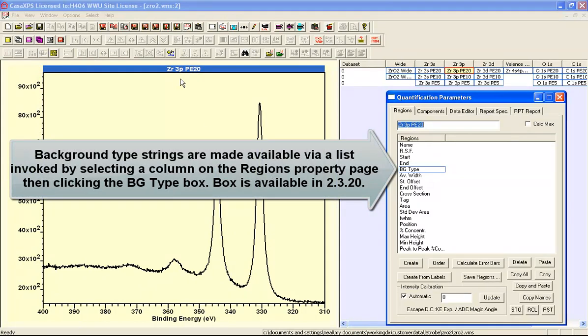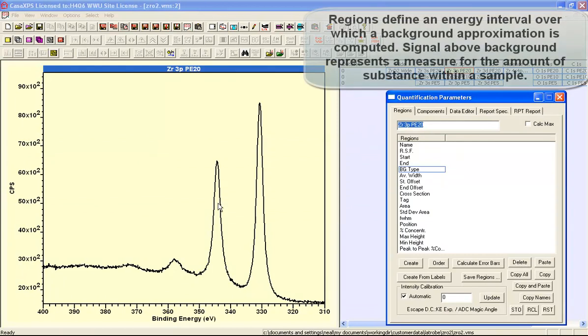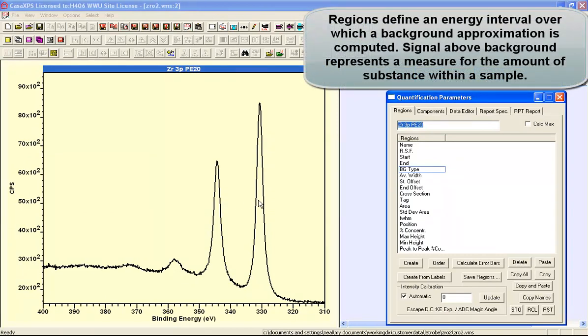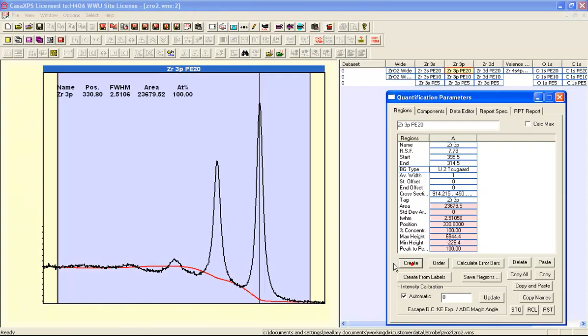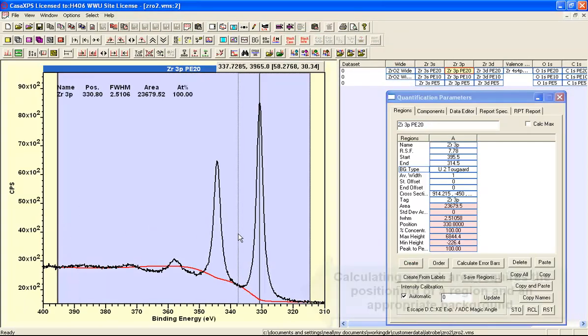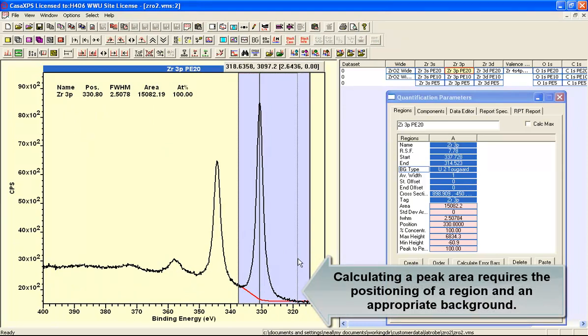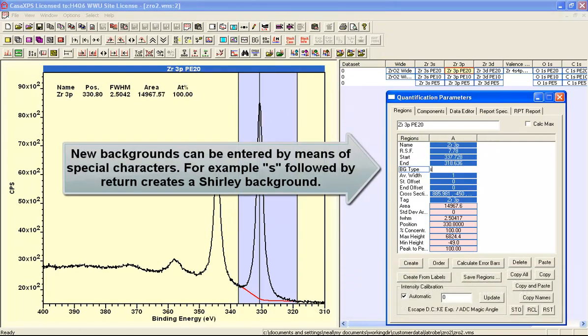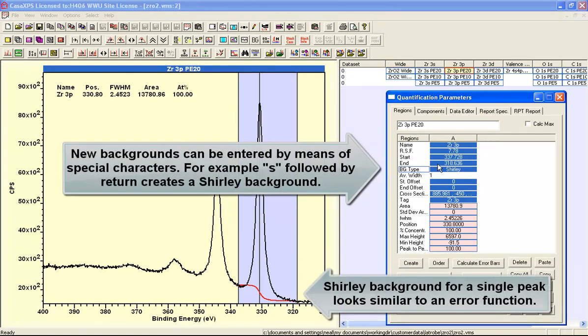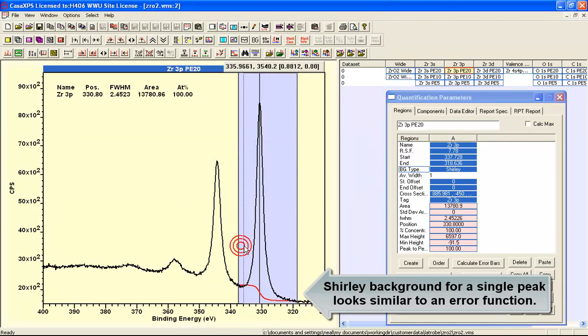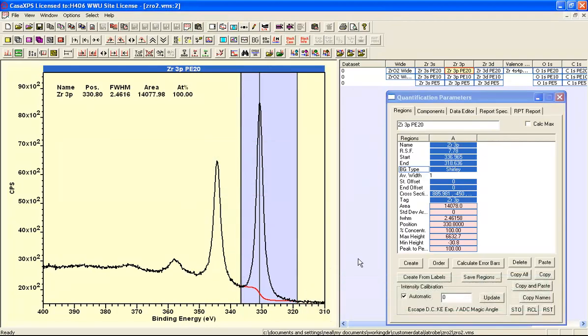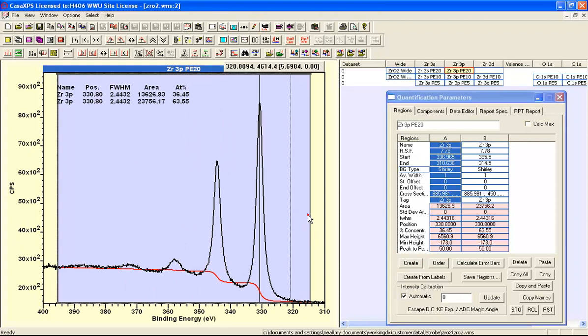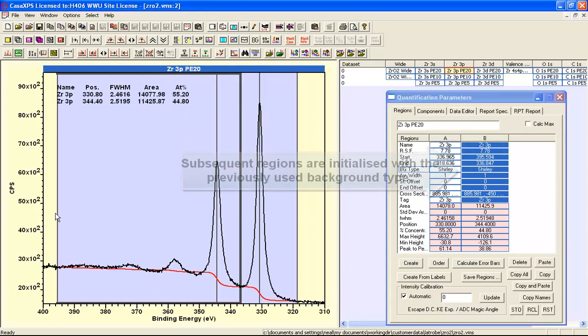The aim of using a 3p doublet is that we ought to have a pair of peaks from a doublet that should be in a well-defined ratio of 2 to 1. We'll begin by creating a background and isolate the individual peaks within the doublet using the background. We'll start off with a Shirley background, so if I type in S and press return, the background type changes to Shirley, and this will then become the default background type, so when I create the next background, it too will be a Shirley background.